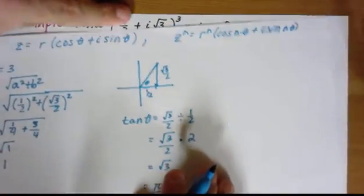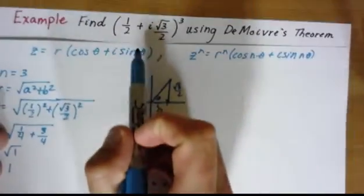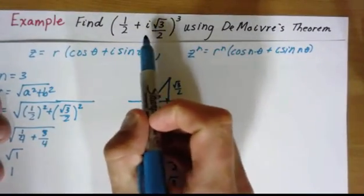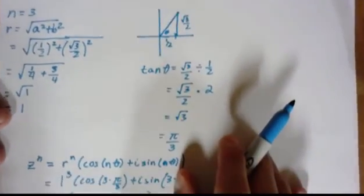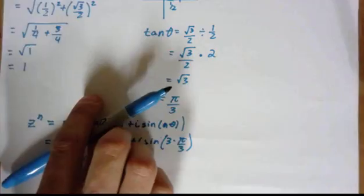So the value, all of that work to get negative one. You can do it on the calculator pretty quickly, but we're using De Moivre's theorem here. So if you have any questions or comments, please type them below. We'll see you next time.